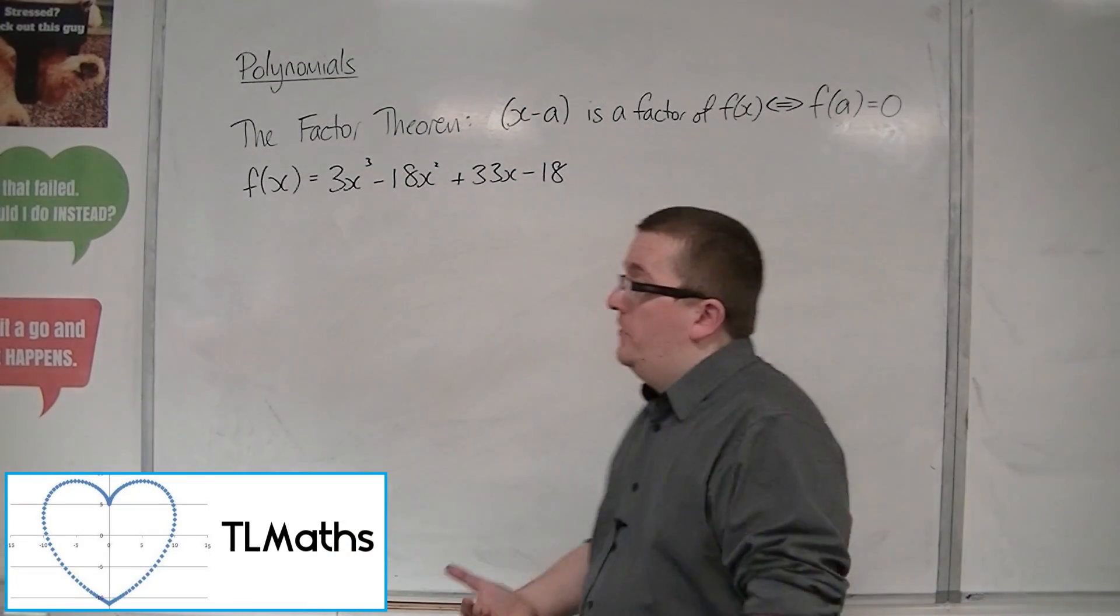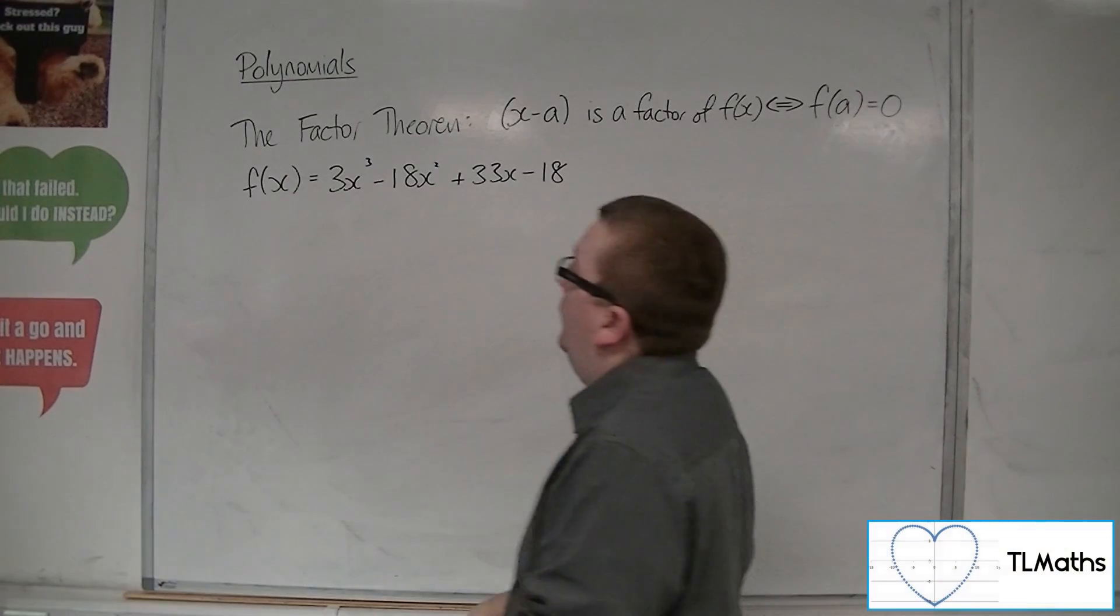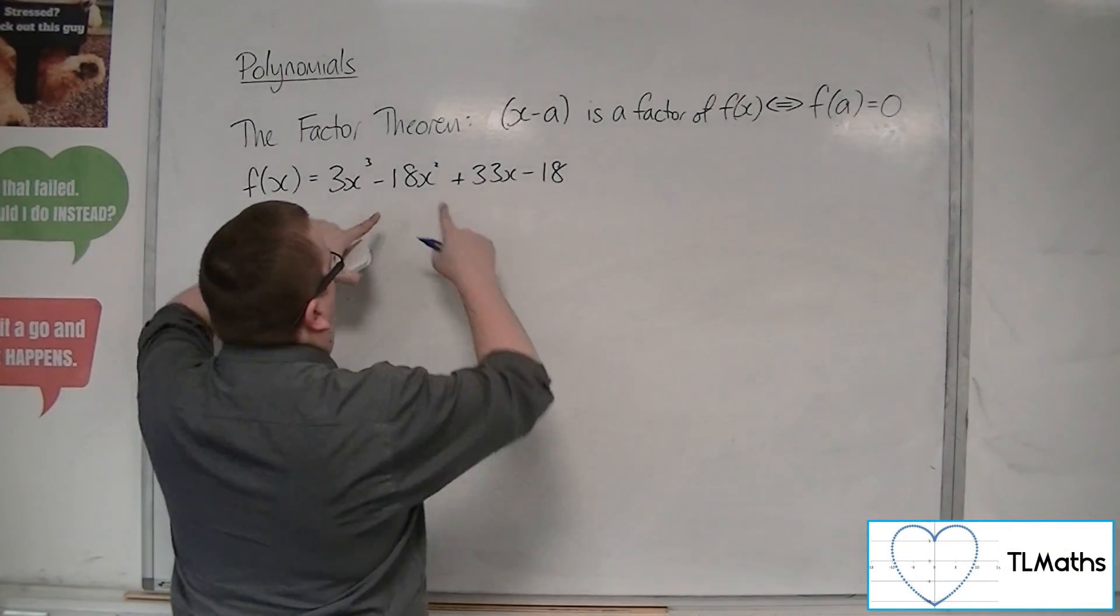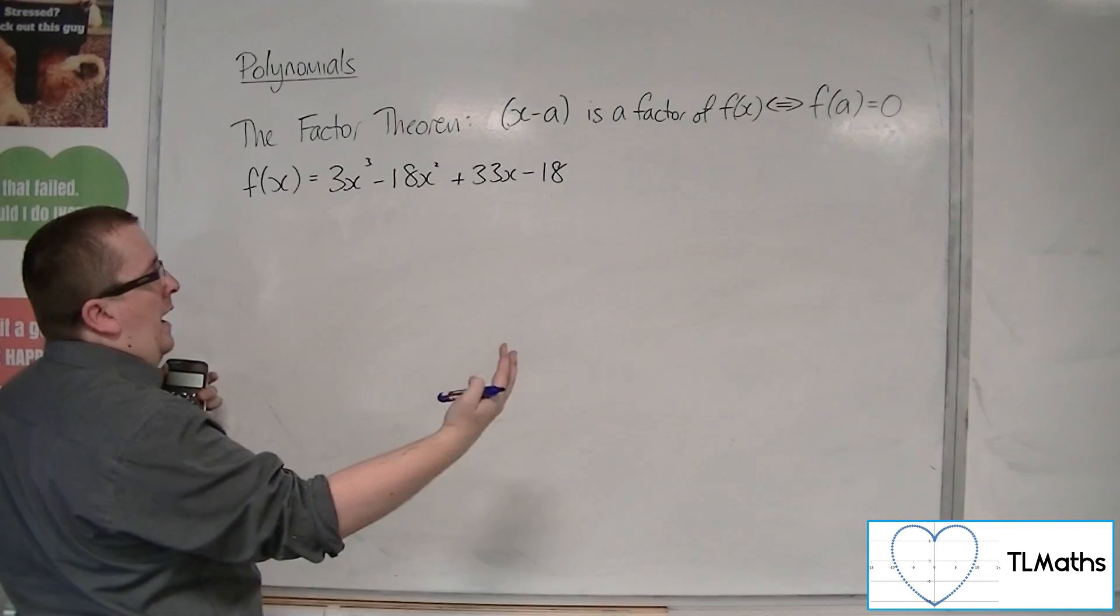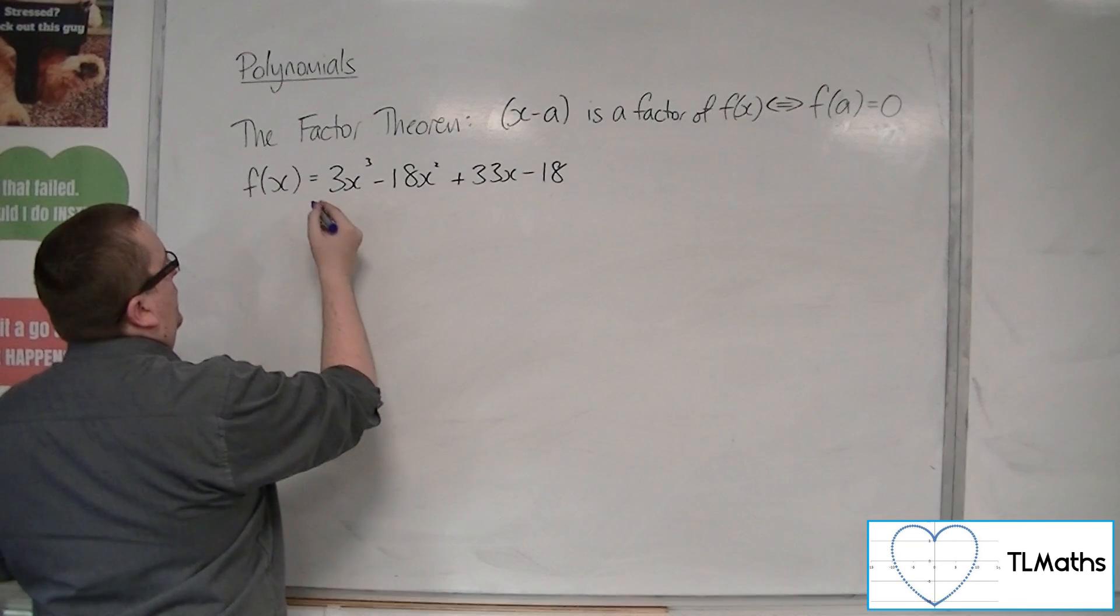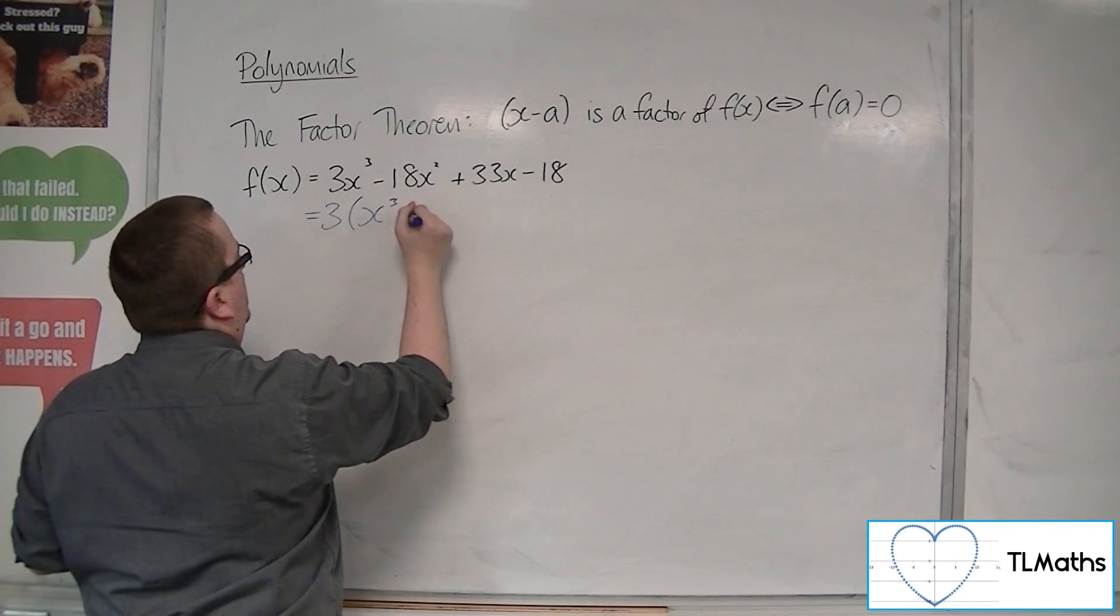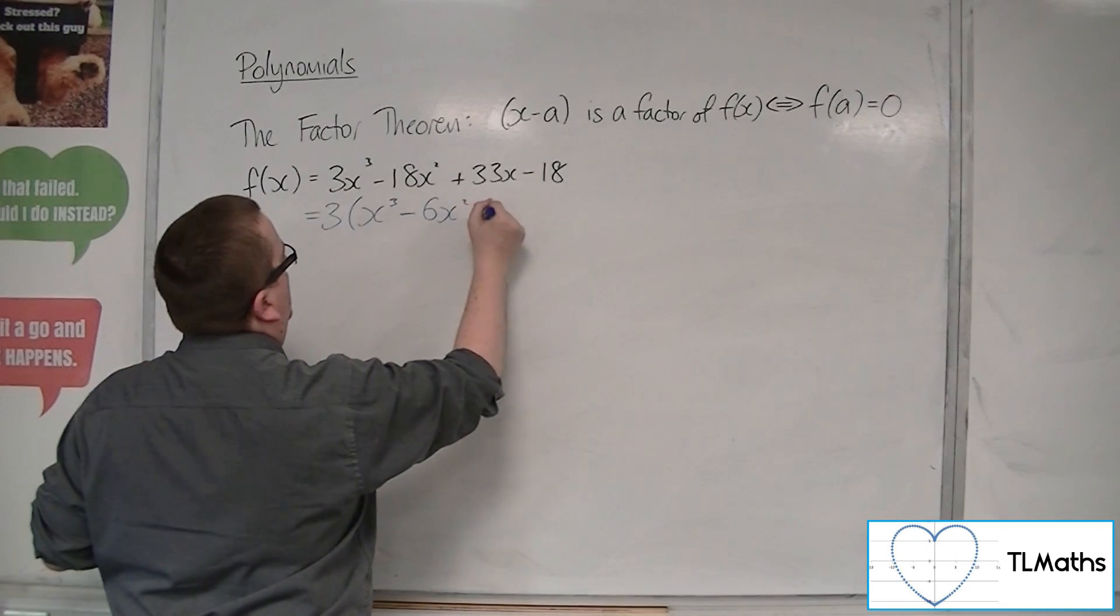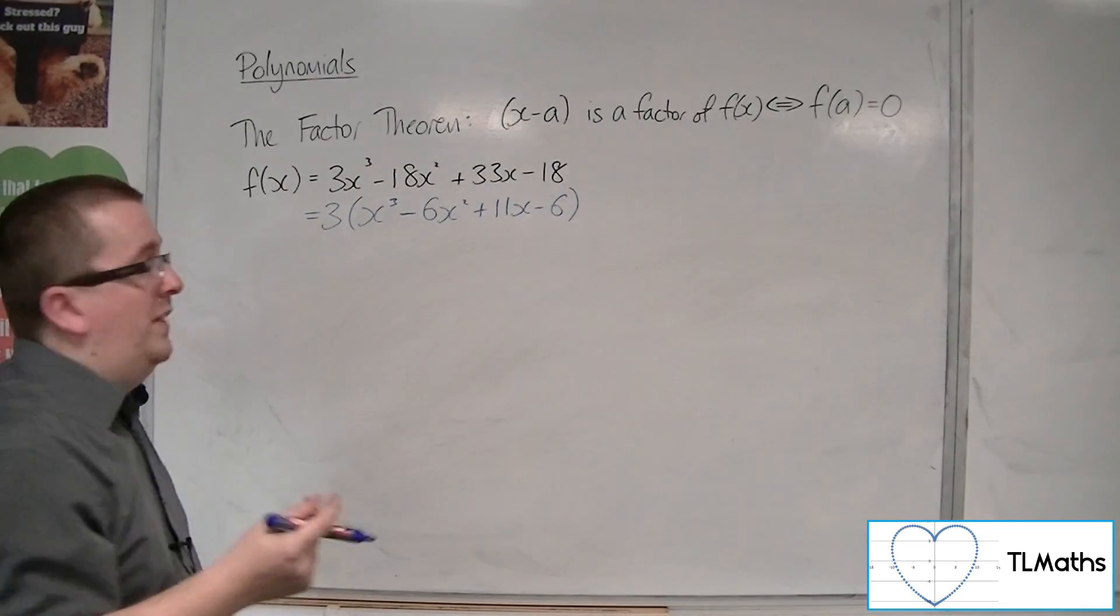Let's say I wanted to use the factor theorem to completely factorize this cubic. First of all, I would spot that all of these terms have a factor of 3. So you could factor the 3 out first, if you like. So we'd have 3 lots of x cubed minus 6x squared plus 11x minus 6. So that would be the first thing.